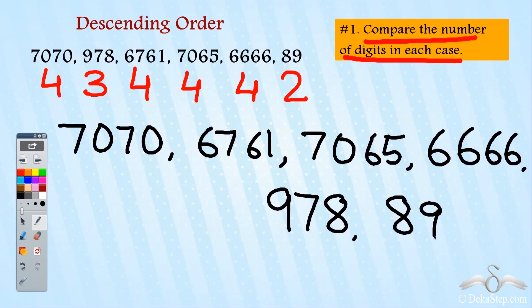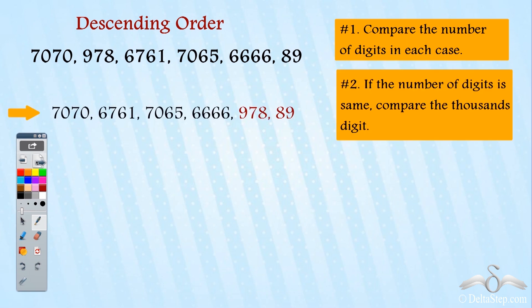This is what we get after rule one: all the four digit numbers, then the three digit number and the two digit number. Now how do we arrange these numbers?